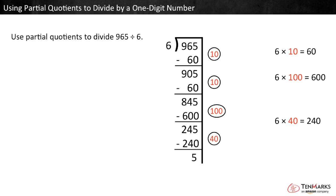There are 5 left. That is not enough to make any more groups of 6. Now, let's find how many equal groups of 6 are in 965 by adding the partial quotients.